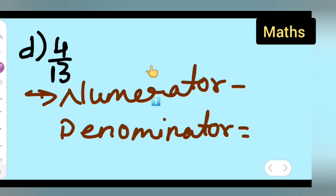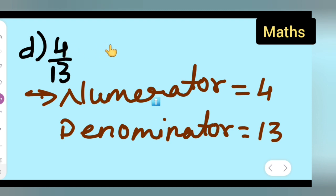For the last fraction, 4 upon 13, your numerator is 4 and denominator is 13. So you'll have to write down the denominator and numerator for each fraction.